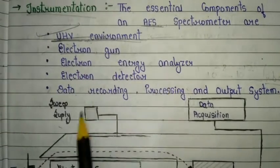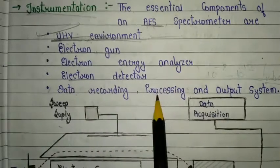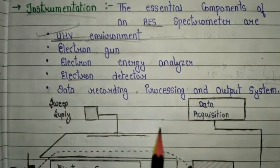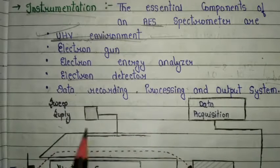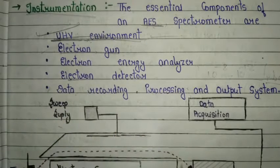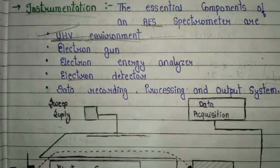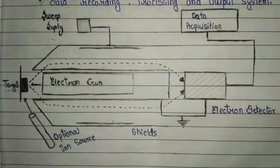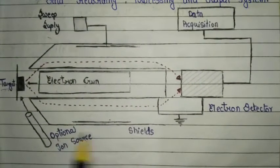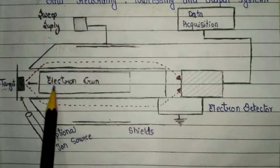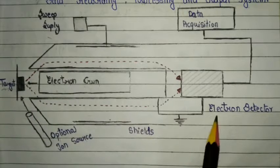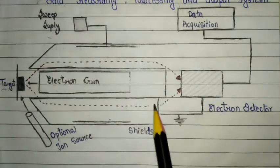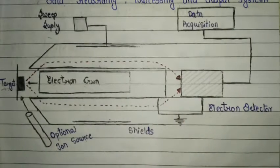The third essential component is the electron energy analyzer. The fourth is the electron detector, followed by data recording, processing, and output systems. These are all the essential components of the AES instrument. The instrumentation diagram includes a target, electron gun, sweep supply, optical ion source, shield, electron detector, and data acquisition system. That covers the important instrumentation of AES.